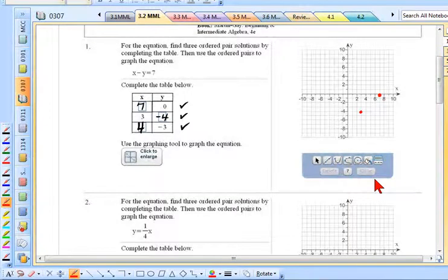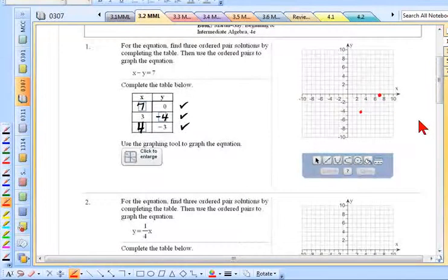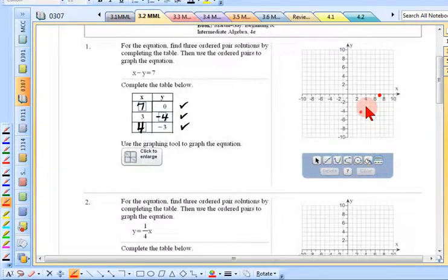The third one is 4, negative 3. From the origin, go right 4, go down 3, and there it is.